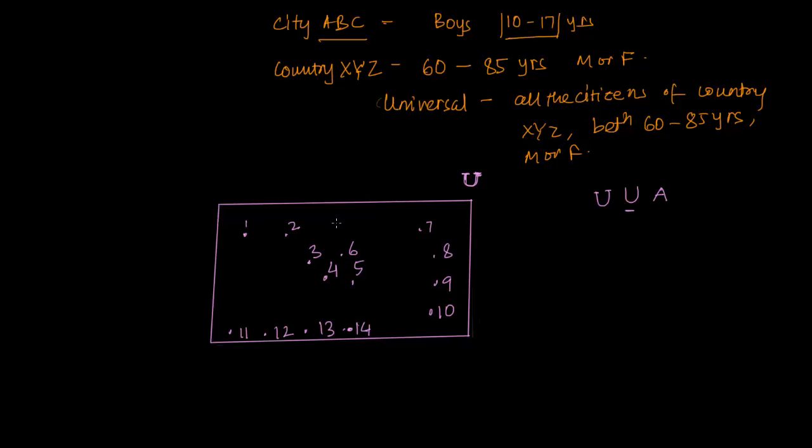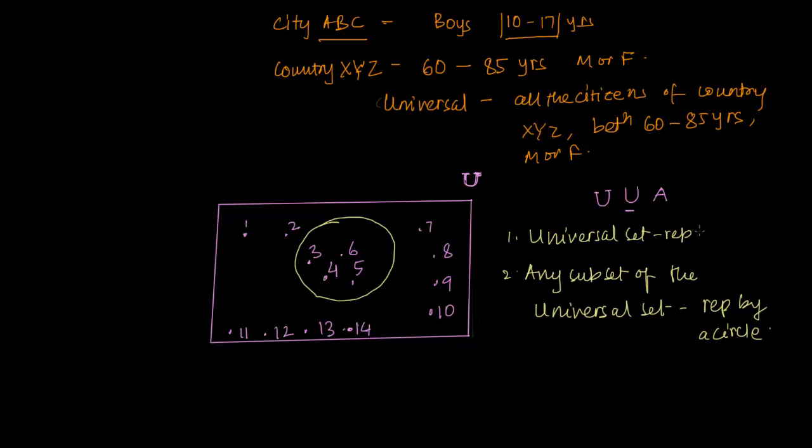Now, I may have a Set A that contains these elements. So, any subset of the Universal Set is denoted by a Circle. Any subset of the Universal Set is represented by a Circle. And the Universal Set is represented by a Rectangle.